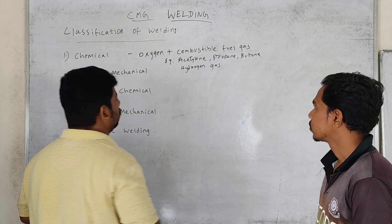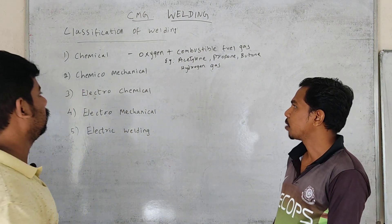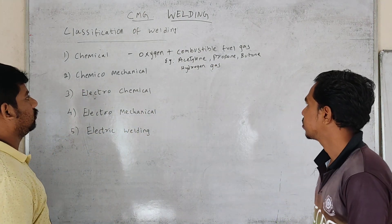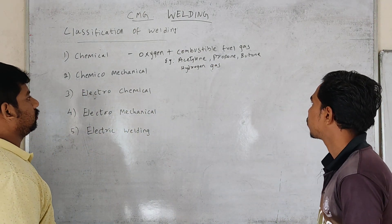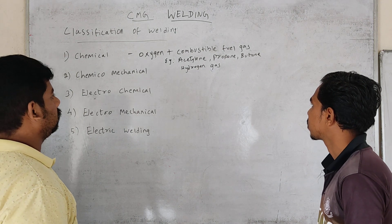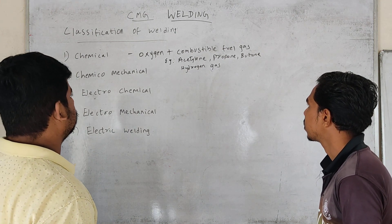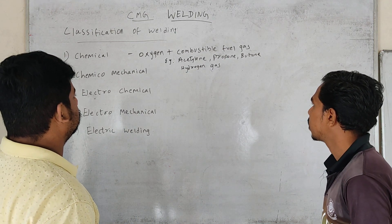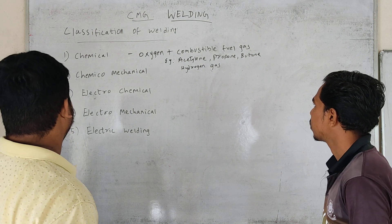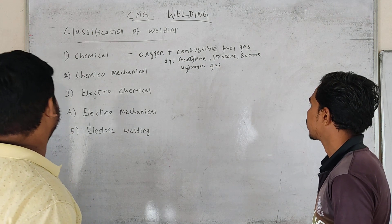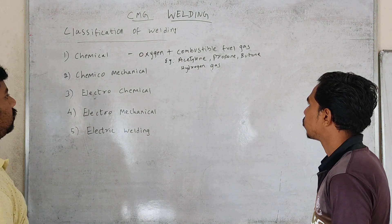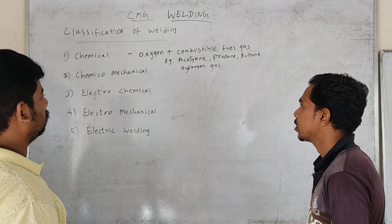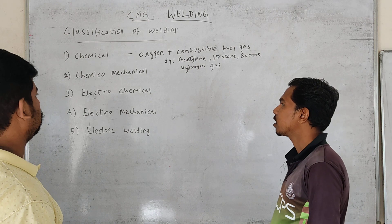If there is chemical welding, there is oxygen and combustible fuel gas. For example: acetylene, propane, butane, and hydrogen gas. That is chemical welding.